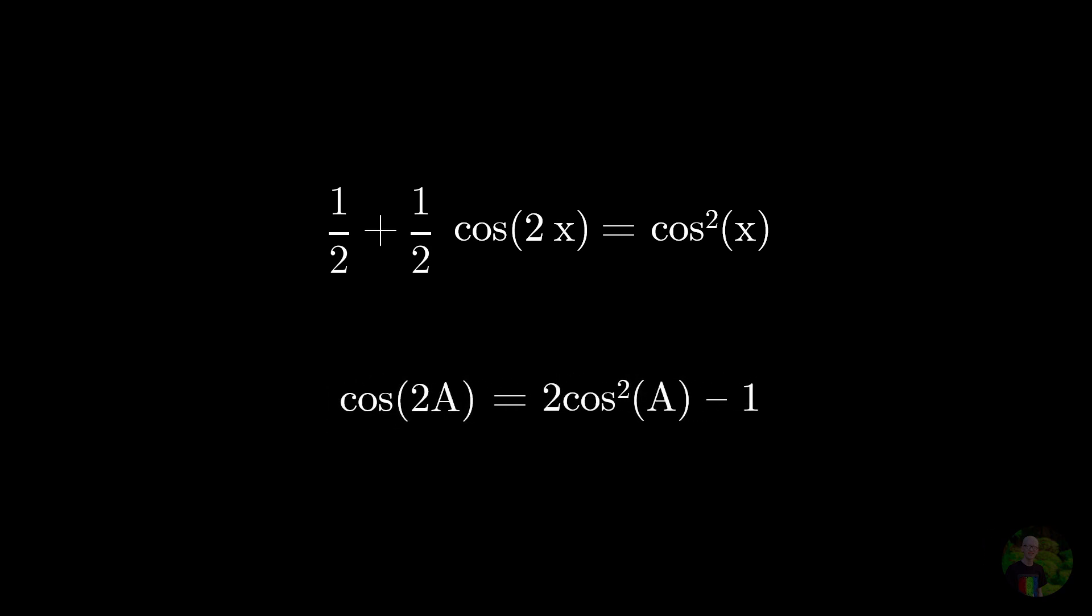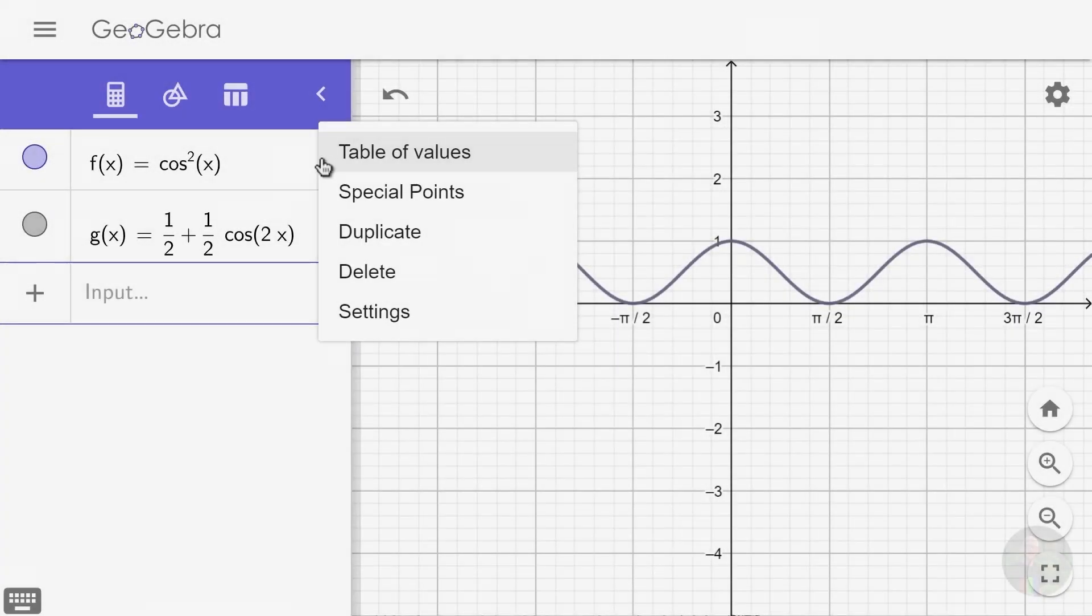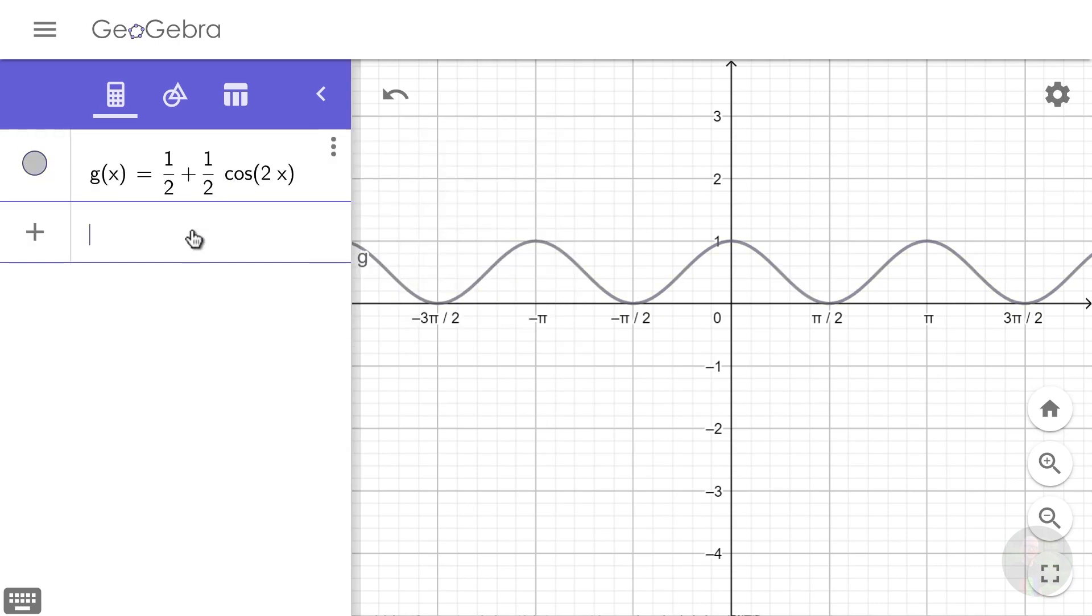Now you may have learned it as cos 2a is equal to 2 cos squared a minus 1, but it's exactly the same thing. And similarly, we could do it for sin squared x as well. So this is how the sine wave looks, and if we square it, it also looks similar to the above expression, but it seems to be flipped.